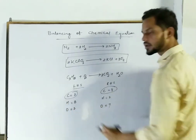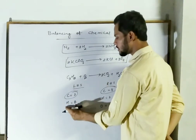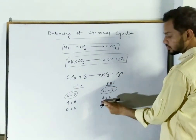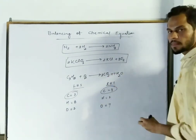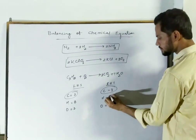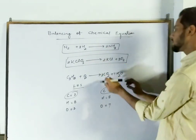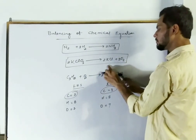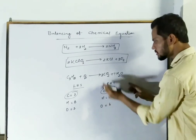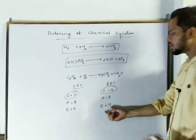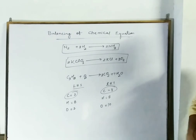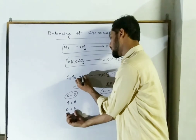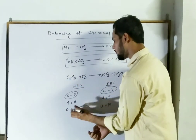For hydrogen, in LHS we have 8 hydrogen. In RHS, H₂O has 2 hydrogen, so it should be multiplied by 4, making hydrogen 8 — now hydrogen is balanced. The number of oxygen on RHS becomes 6 (from 3 CO₂) plus 4 (from 4 H₂O) = 10 oxygen. In LHS we have only 2 oxygen, so it should be multiplied by 5, giving 5 × 2 = 10 oxygen. Now oxygen is also balanced.